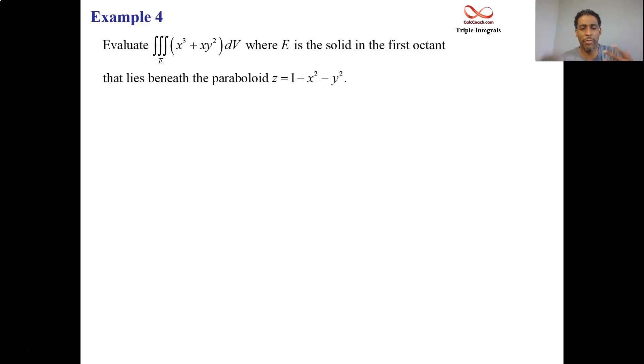For triple integrals, we're integrating over a 3D shape. The name of our 3D shape in this particular problem, capital E, and it's defined the following way. The solid that's in the first octant that lies beneath the paraboloid.